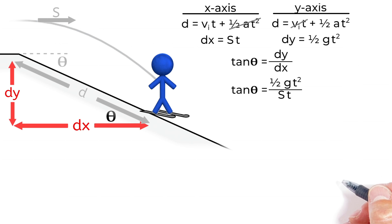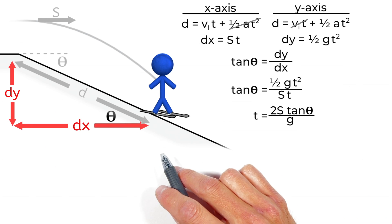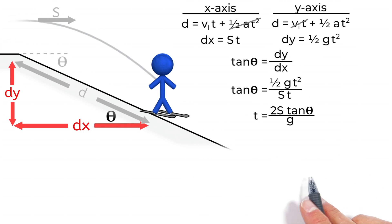And you'll see these t's cancel out. And rearranging this, we can get the time the skier is going to spend in the air. That is 2s tan theta over g.